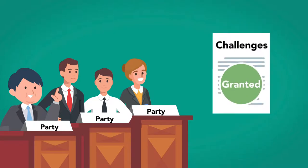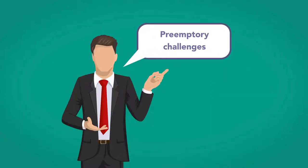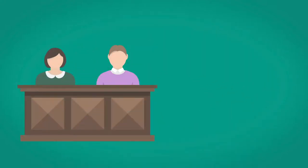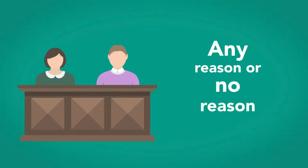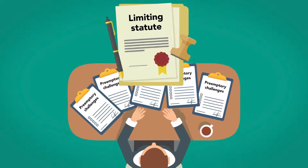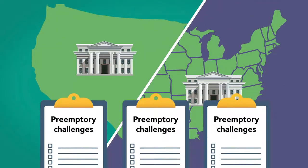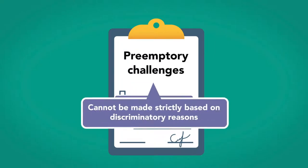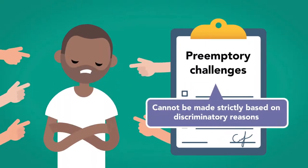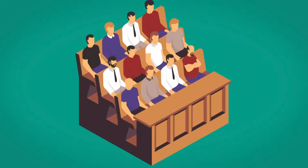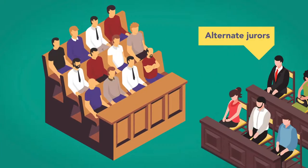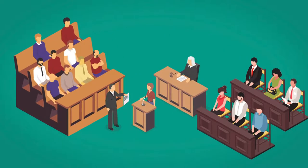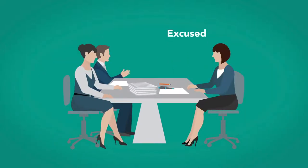Peremptory challenges do not need cause — they are wild card challenges used to knock out a potential juror for any reason or for no reason. The number of peremptory challenges is limited by statute; in federal and most state courts, they are limited to three. Note that while peremptory challenges do not require a reason, they cannot be made strictly based on discriminatory reasons, such as based solely on race. After voir dire is completed, the jury is seated. In some trials, alternative jurors are selected in case a juror is unable to complete the case. Alternative jurors sit on the trial but not the deliberations, unless a juror is excused.